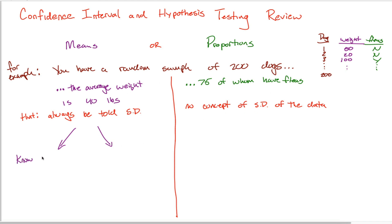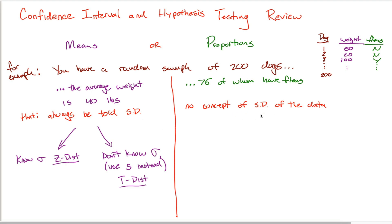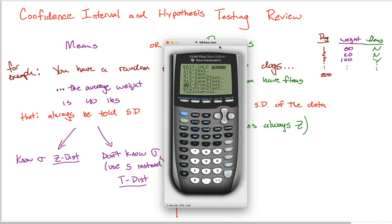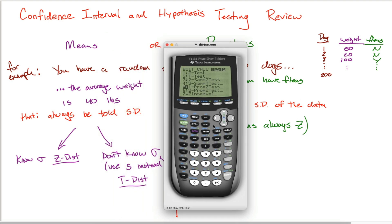After deciding you're dealing with means, the next big question is about that standard deviation. If we know the population standard deviation — sigma — it follows a z distribution. If you don't know sigma, you use the sample standard deviation S instead, and it's called a t distribution. Over in the proportions side, there's no standard deviation to decide about — proportions always follow a z distribution.